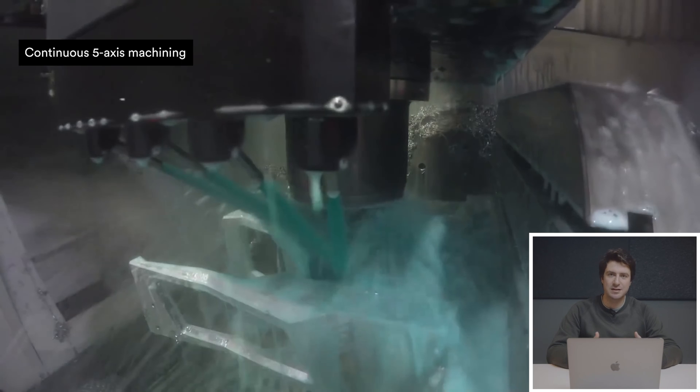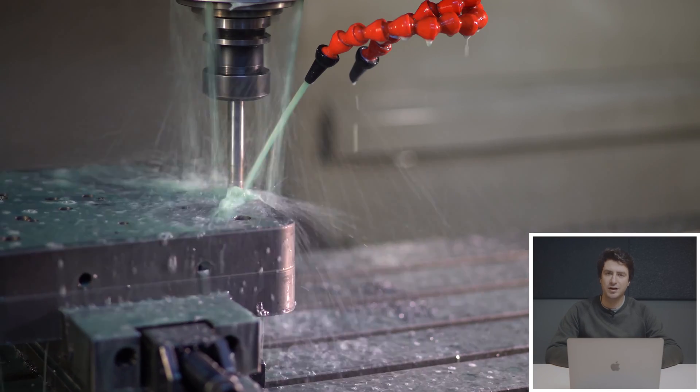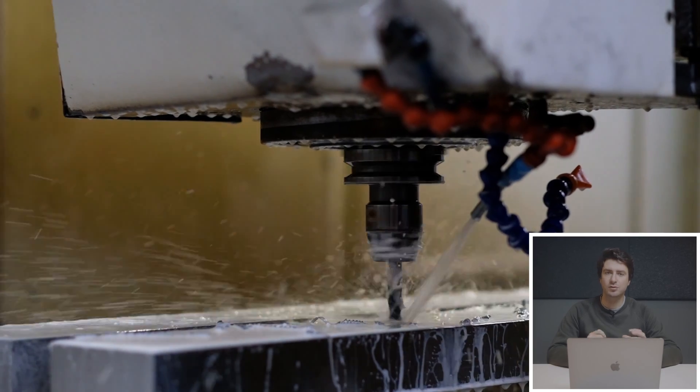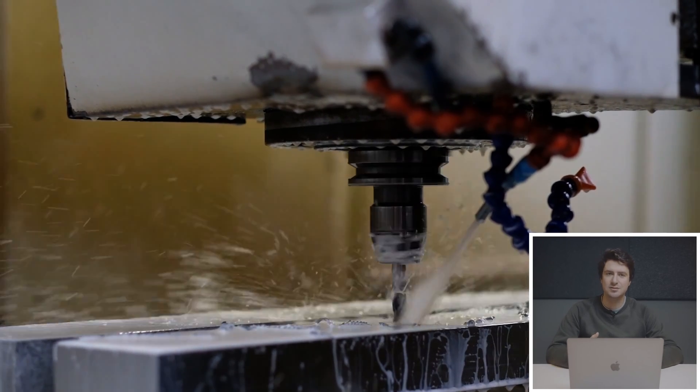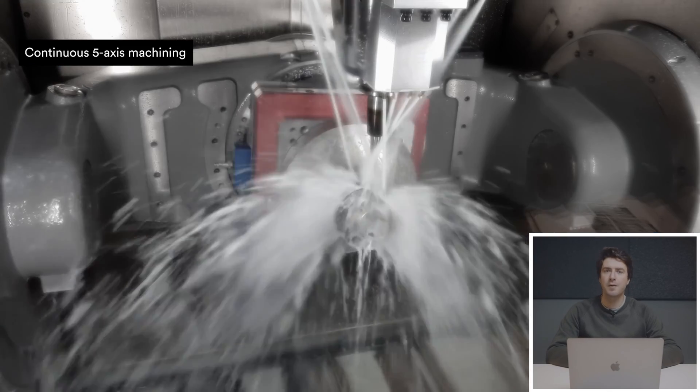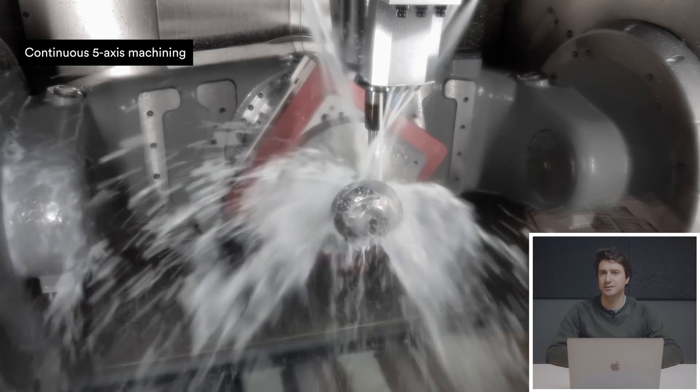Of course, we can stop the machine and let the heat dissipate naturally from the tool and from the part. However, what we can do in order to not stop production is the use of a coolant where the tool is interacting with the part. And that's great for two reasons. Of course, it allows us not to stop the production, but it also reduces the tool wear between the tool and the part.